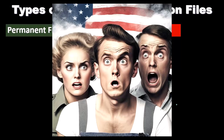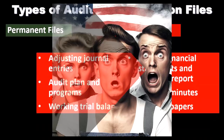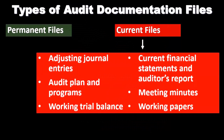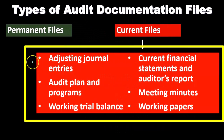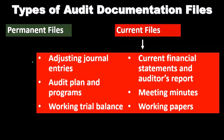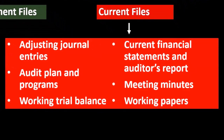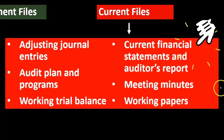The current audit information is often organized on a yearly basis. So these are things grouped in the current file: the adjusting entries, the audit plan and programs for the current audit year, the working trial balance for the current year, the current financial statements and auditors reports, the minutes for the current time period, and the working papers.